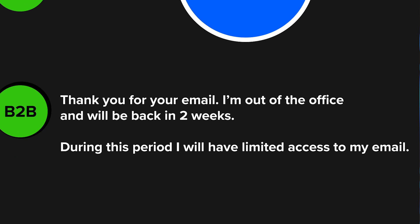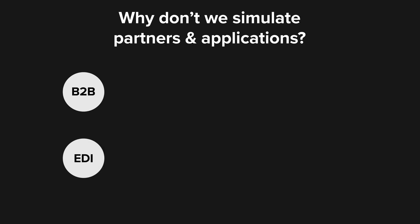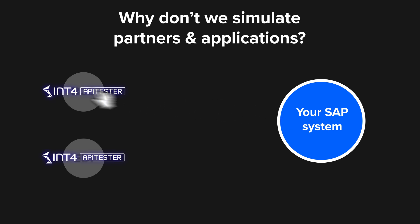This means the whole SAP project team has to wait. What usually happens? Either the SAP S4HANA program takes longer or the scope of testing is significantly reduced. This results in missed deadlines or much lower quality of the migration. So what is the alternative? The answer is: why don't we simulate partners and applications to isolate our SAP system and remove those dependencies?